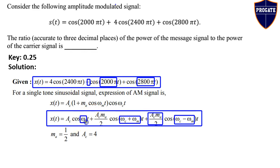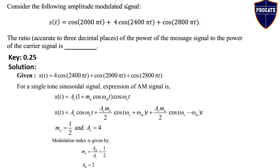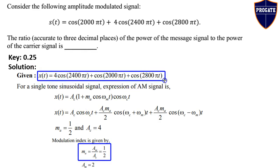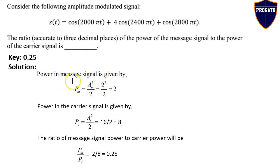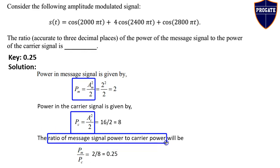From the comparison, ωc = 2400π and Ac = 4. Using the modulation index formula MA = Am/Ac, we substitute the obtained values of MA and Ac to calculate Am. The power in the message signal is Pm = Am²/2, and the power in the carrier signal is Pc = Ac²/2. Dividing Pm by Pc gives the required ratio of message signal power to carrier power.